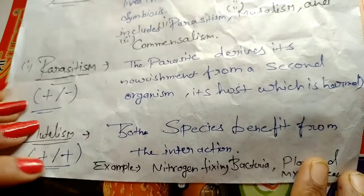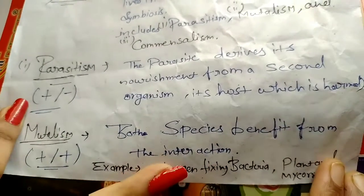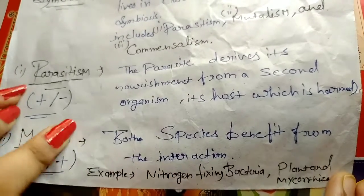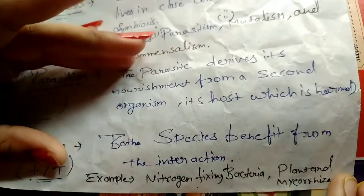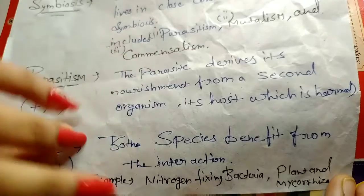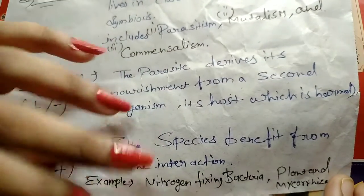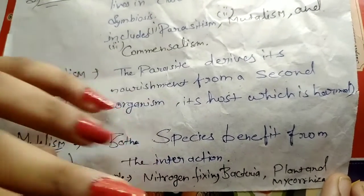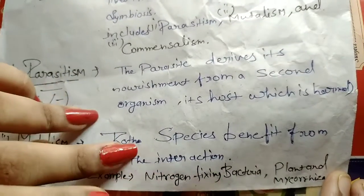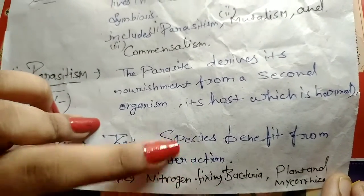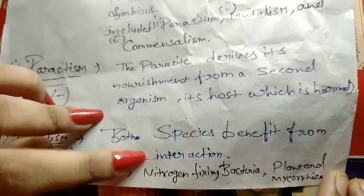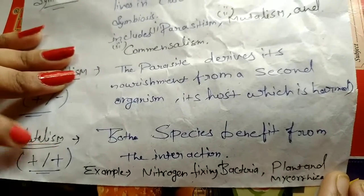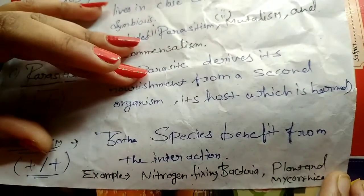Next, we are discussing mutualism. In mutualism, both species benefit from the interaction. An example is nitrogen-fixing bacteria and plants: plants supply nutrients to the bacteria, and the bacteria fix nitrogen for the plants. Both benefit, which is why it is also called a plus-plus interaction.